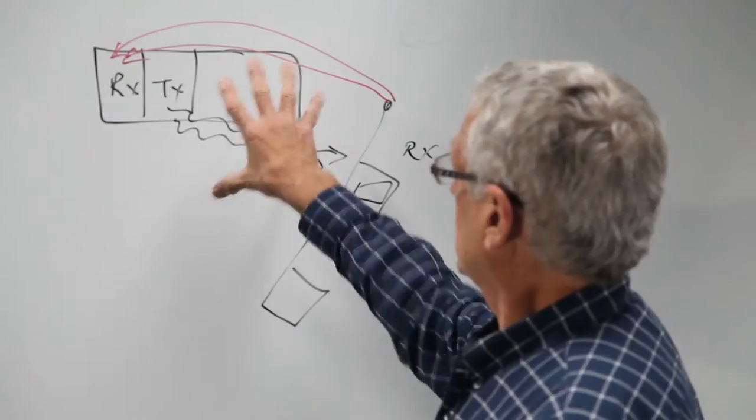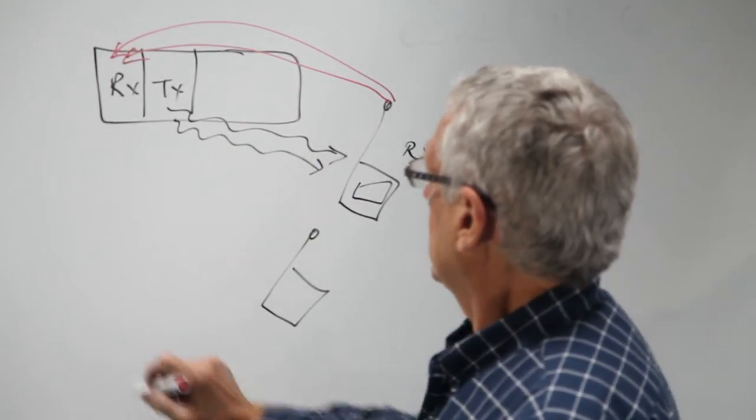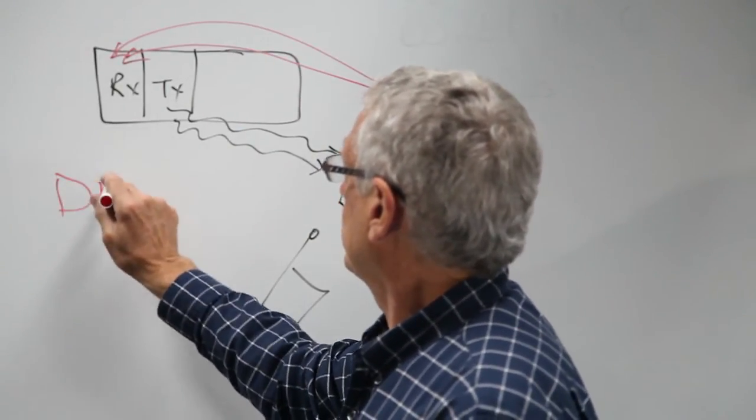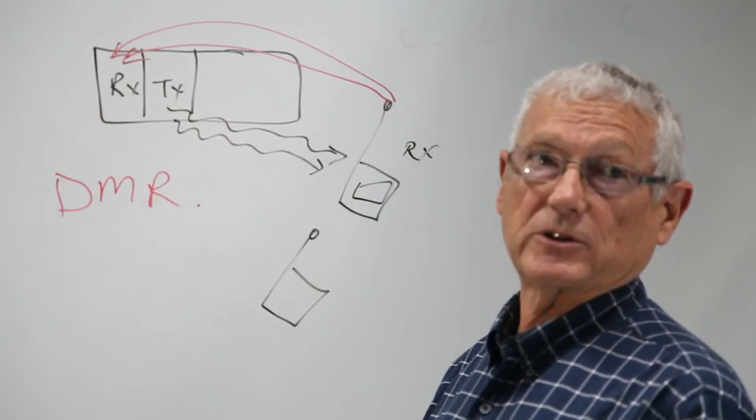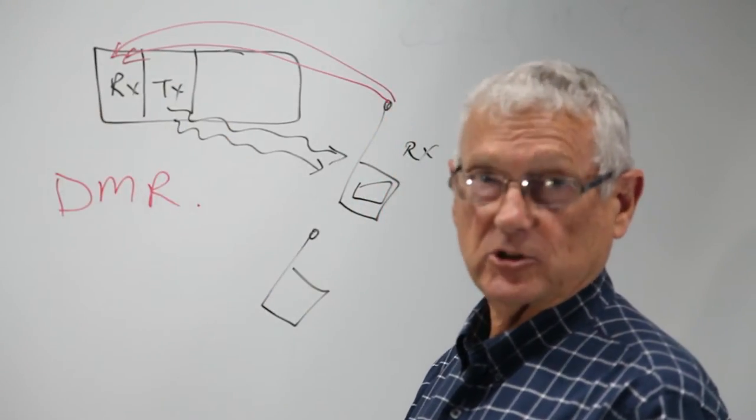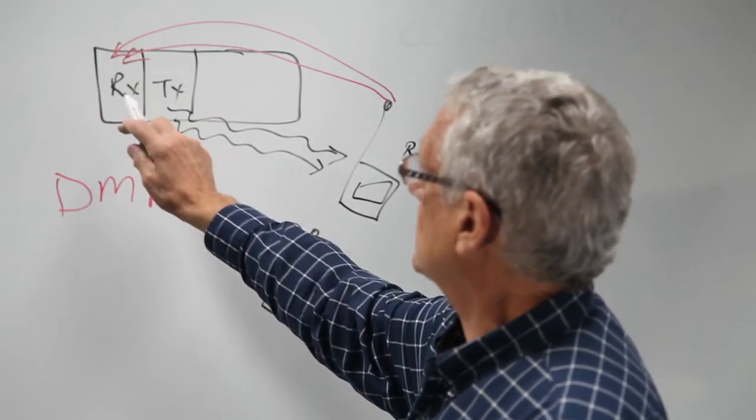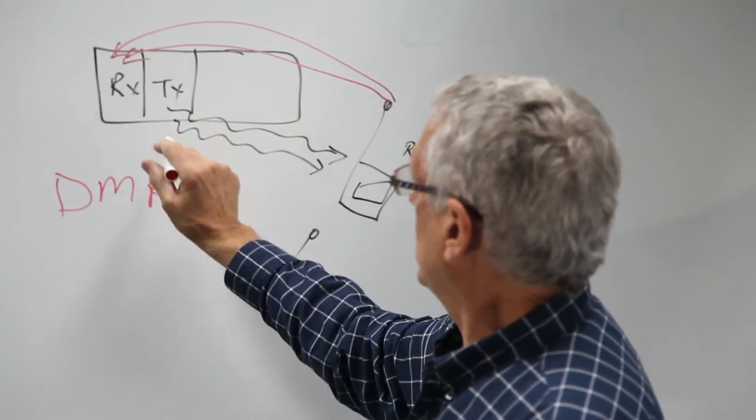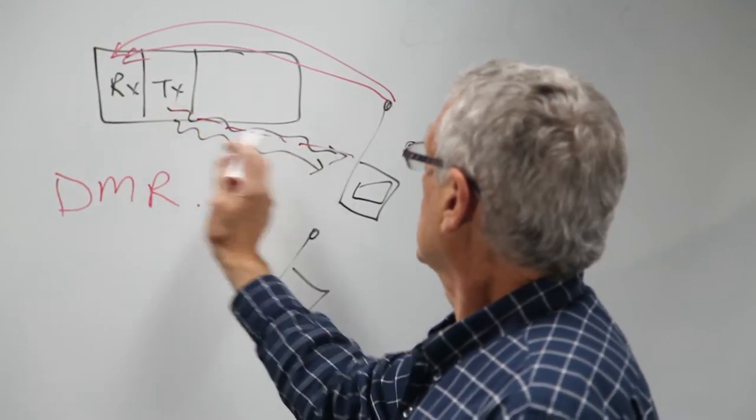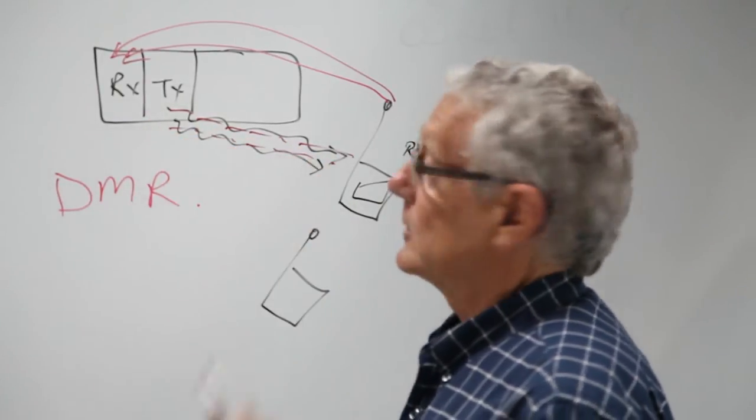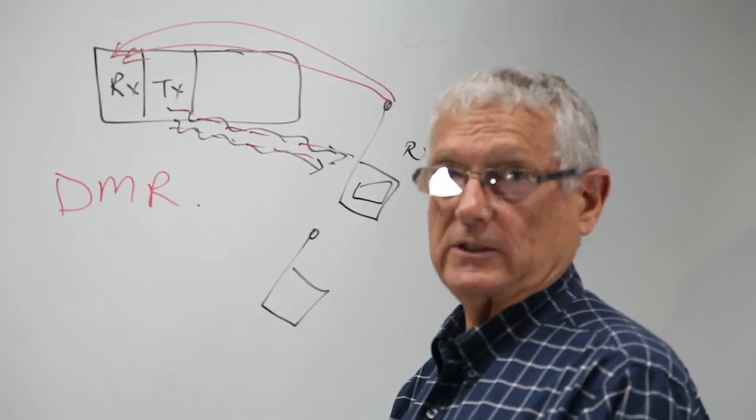Now in addition to this, in our DMR system, as well as the physical hardware channels, we have logical channels, and these are time slots. On the transmitter, there are two time slots which are part of the 12.5 kilohertz bandwidth.